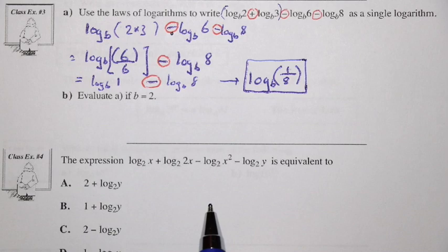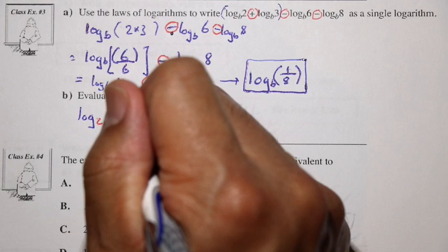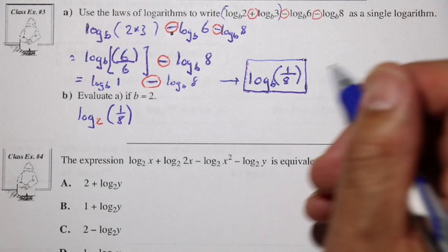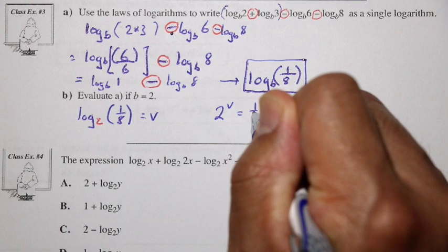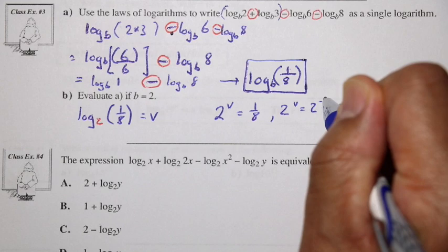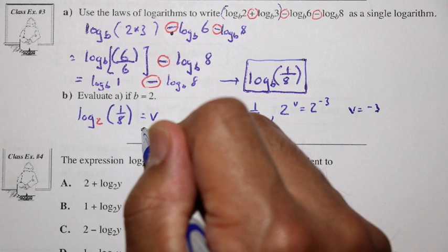In part b, we evaluate with b equal to 2: log base 2 of 1 over 8. Setting that equal to v, 2 to the v equals 1 over 8, which is 2 to the negative 3. Therefore v equals negative 3.